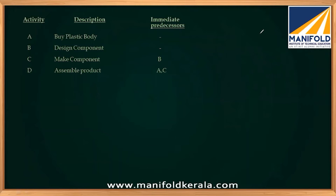For making a product which has two parts — one is a plastic body and another component — there are four activities. Activity A: buy the plastic body from the market (no prior requirements). Activity B: design the component (also no prior requirements). Activity C: manufacture the component — design must be completed first, so B is the immediate predecessor of C. Activity D: assemble the product — both the plastic body (A) and the manufactured component (C) must be complete, so A and C are the immediate predecessors of D.